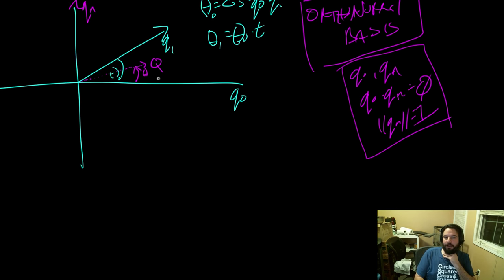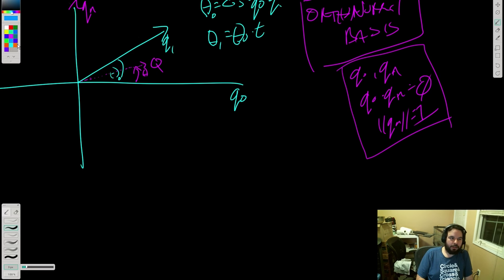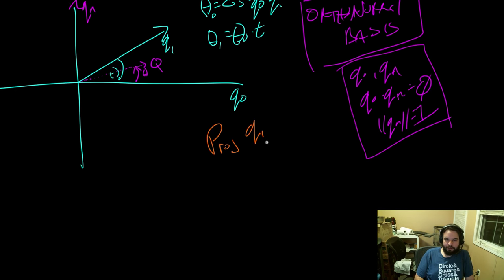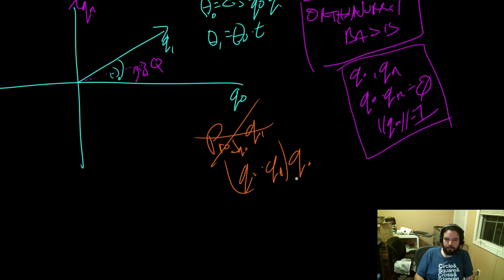How do we get Qn? This is straightforward linear algebra. If we project q1 onto q0 — that's (q0 · q1) * q0 — we get some scalar times q0, giving us vector A.